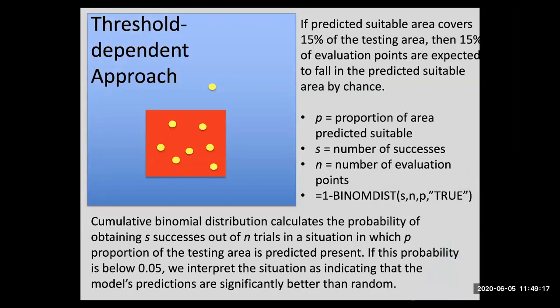So if our predicted suitable area covers, for example, 15% of the testing area, then 15% of the evaluation points are expected to fall in that predicted area by chance. And so we're going to use that proportion, 0.15, as P, the proportion of area predicted as suitable. We have our test data, and the number of points in that test data set is n, and the number falling in the area predicted suitable is s. And so I put in even the little phrase from Excel, where you can do this test in a second. But the cumulative binomial probability distribution calculates the probability of obtaining s successes out of n trials in a situation in which P proportion of the testing area is predicted as suitable.